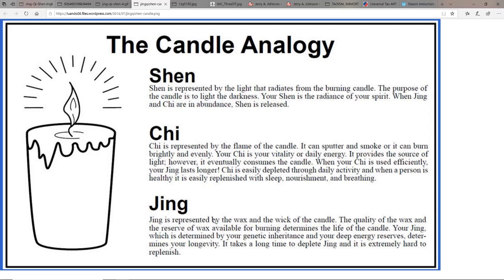Chi is represented by the flame of the candle. It can sputter and smoke or it can burn brightly and evenly. Your Chi is your vitality, your daily energy. When your Chi is used efficiently, your Jing lasts longer. Chi is easily depleted through daily activity and when a person is healthy, is easily replenished with sleep, nourishment, and breathing. Shen is the light that radiates from the burning candle. The purpose of the candle is to light the darkness. Your Shen is the radiance of your spirit. When Jing and Chi are in abundance, Shen is released.